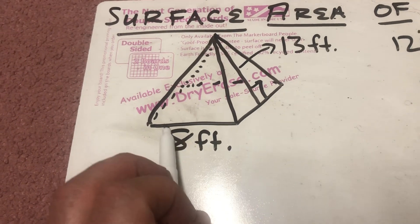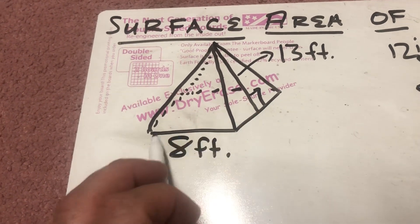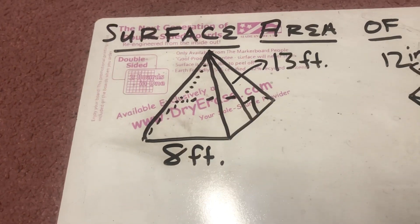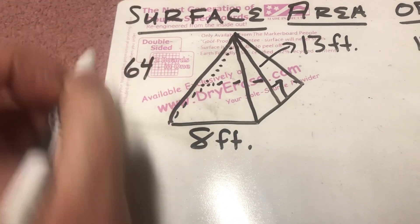For the area of the square, it's just like a rectangle, length times width, or in this case 8 times 8. 8 times 8 is 64, so we'll make a note of that.